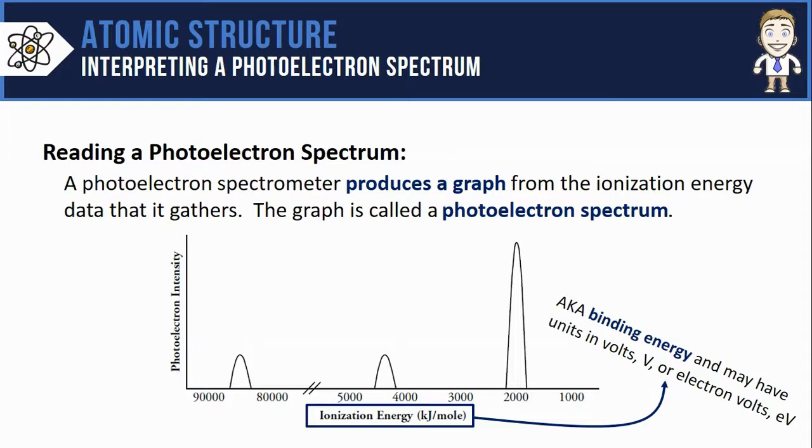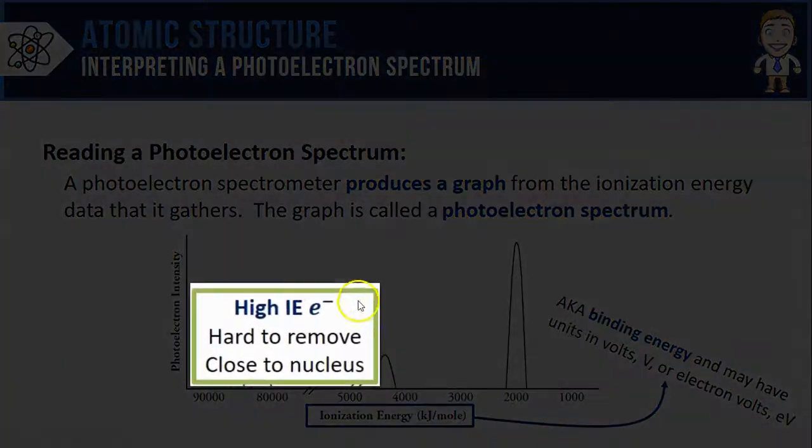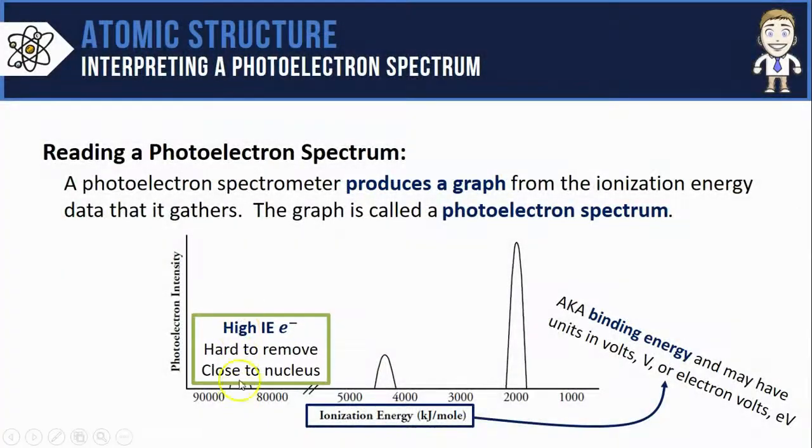It might also have units listed in volts or electron volts. One thing that's strange about a photoelectron spectrum is that you'll see the higher ionization energies listed here on the left and they actually get smaller and smaller as you move out. So you can expect to see the high ionization energy electrons plotted closer to where the two axes meet.